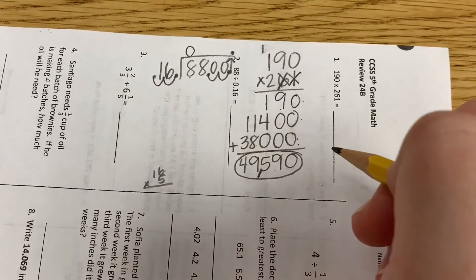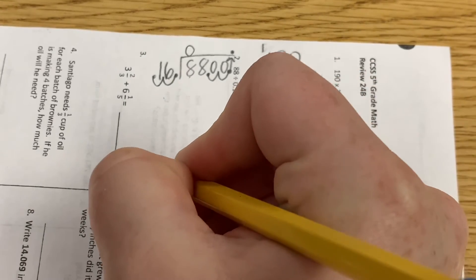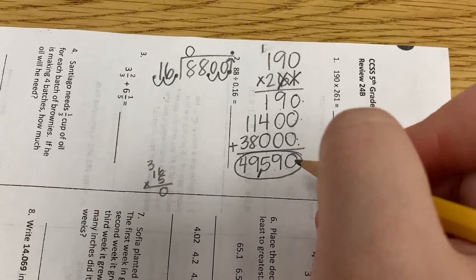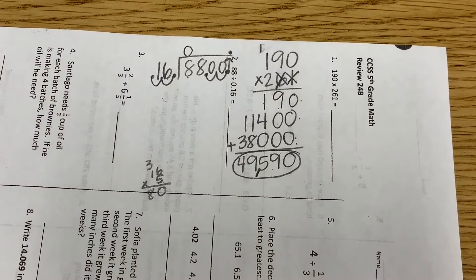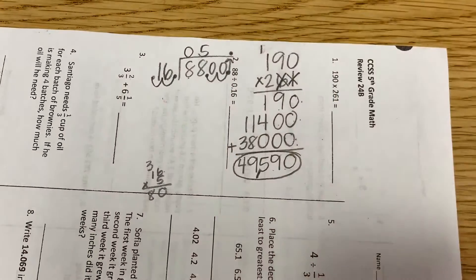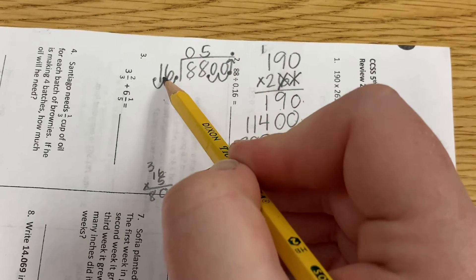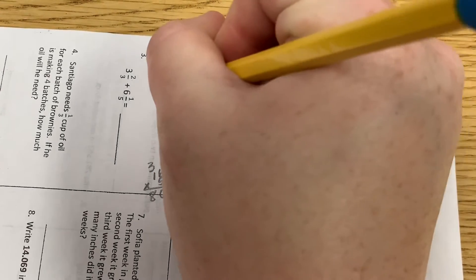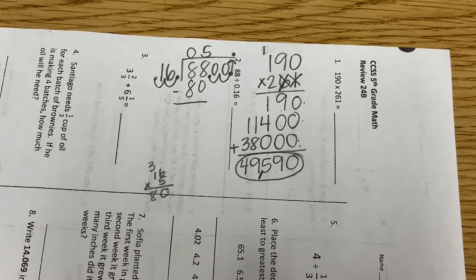16 times 5. Well, 5 times 6 is 30. So I'm going to put my zero, carry my three. 5 times 1 plus 3 more, 8. Could we get any closer without going over? No. So he is correct. Where do I need to put that 5? Above the 8. Hold on. Now 5 times 16 is 80. So I'm going to write 80 under 88. 88 minus 80 is 8.